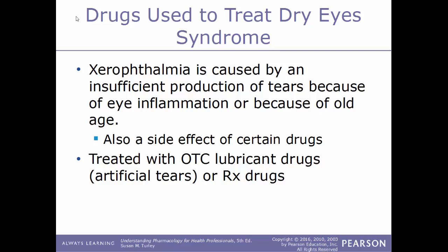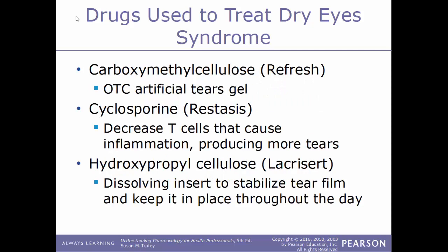Now we'll talk about drugs used to treat dry eye syndrome. This condition, xerophthalmia, is caused by insufficient production of tears because of eye inflammation or simply because of old age, and can also be a side effect of certain drugs. This can be treated with over-the-counter drugs such as artificial tears or with prescription drugs. An example of an artificial tears medication is carboxymethylcellulose, sold under the trade name Refresh — an over-the-counter artificial tears gel.